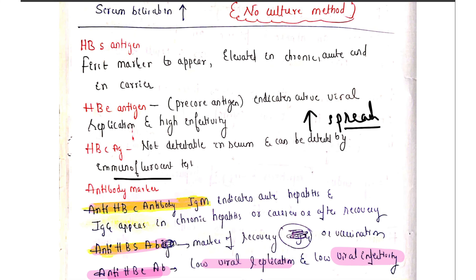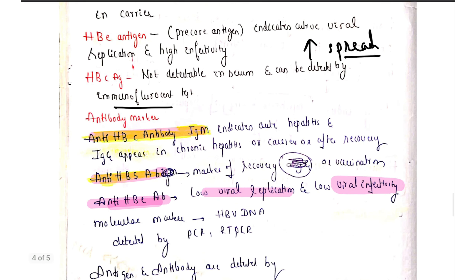Moving on to the antibody markers: anti-HBc antibody against the core antigen appears in acute and chronic hepatitis and during the recovery phase. Anti-HBs, the surface antibody, is the marker of recovery. It can also be seen after taking the hepatitis B vaccine.